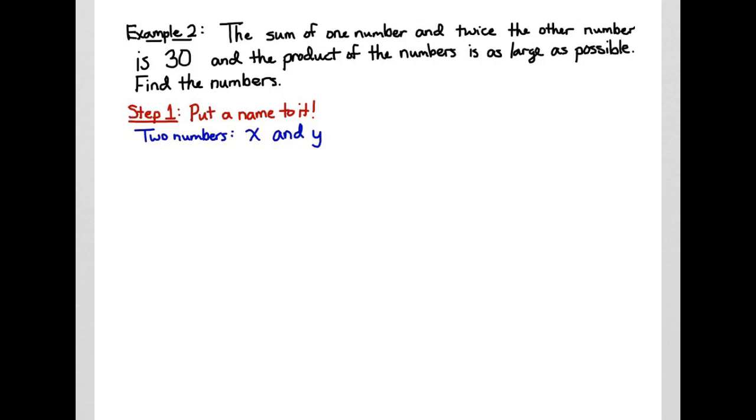Our first step is to give our unknowns some names. We have two numbers that are unknown, so we'll name them x and y. Once we have our names, we need to identify what needs to be optimized. The key phrase to look for is something like 'as large as possible' or 'as small as possible' or the maximum or minimum. We take our two numbers x and y, multiply them, and define that as our product, so p is the quantity that we need to make as large as possible.